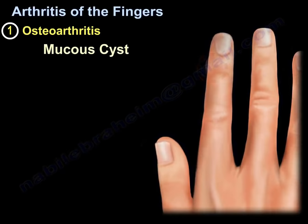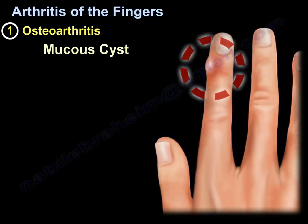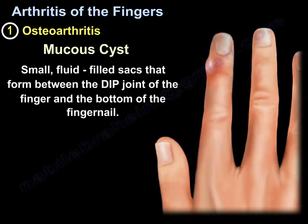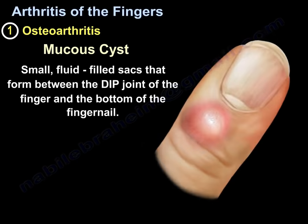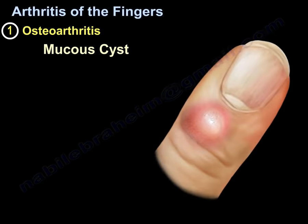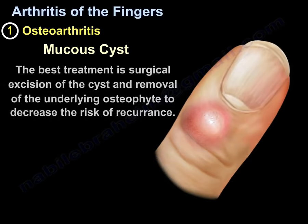Mucus cysts are small fluid-filled sacs that form between the DIP joint of the finger and the bottom of the fingernail. The best treatment of mucus cysts is surgical excision of the cyst and removal of the underlying osteophyte to decrease the risk of recurrence.